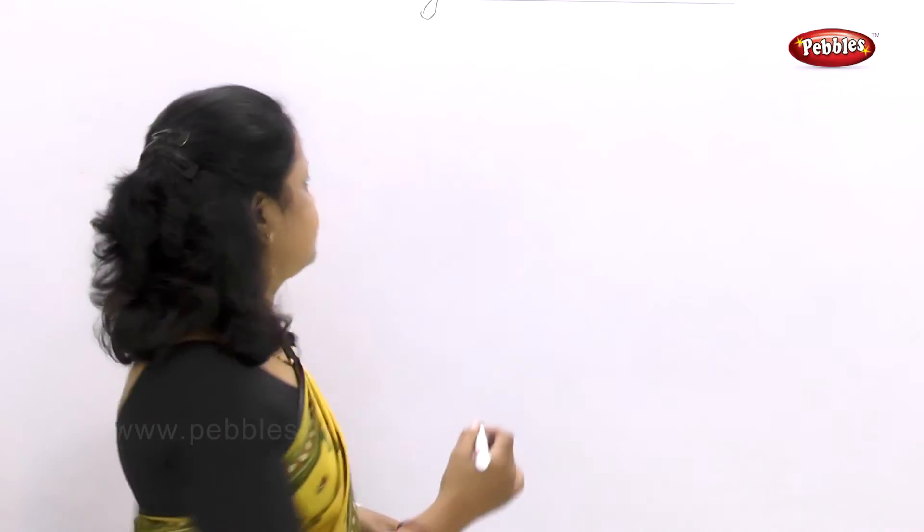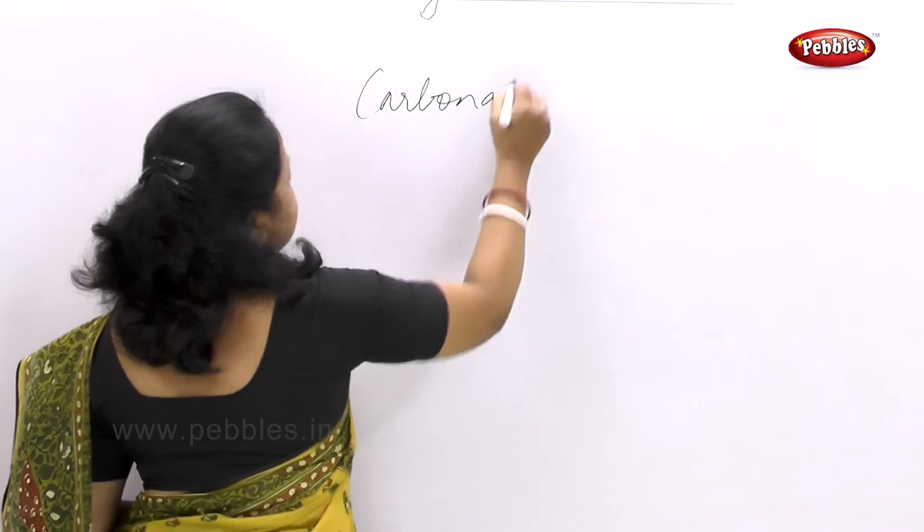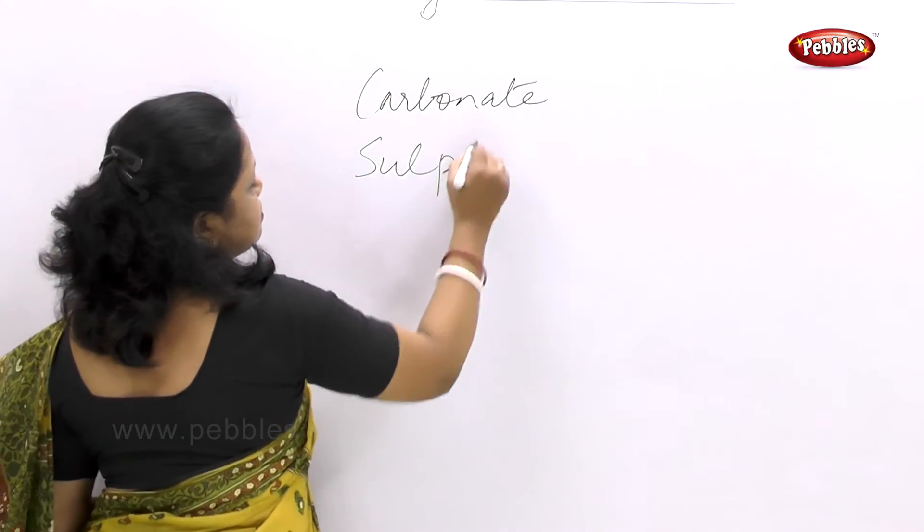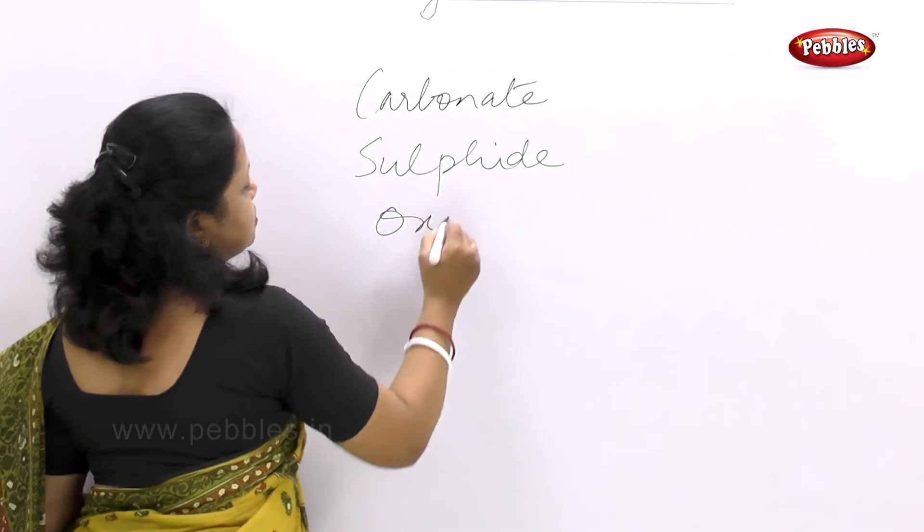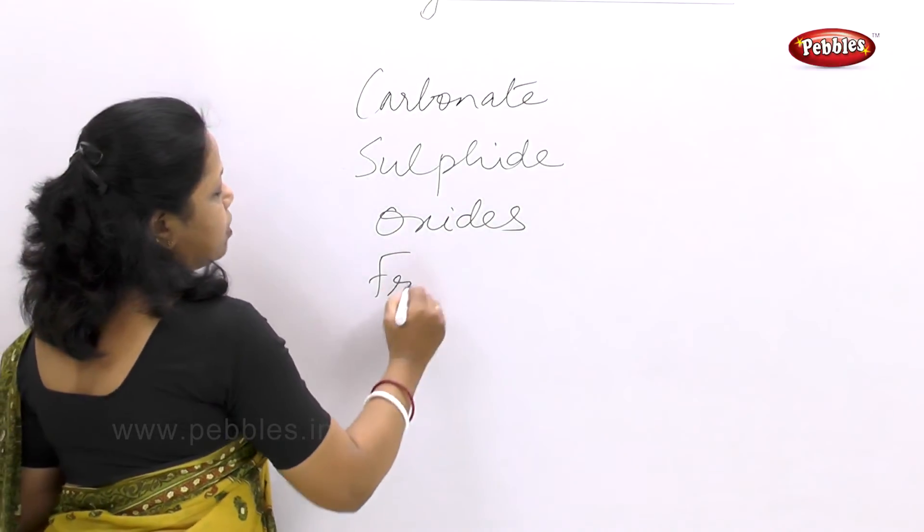Today we are going to study where metals occur in our surroundings — are they in a free state or a combined state? Some metals, as mentioned earlier, are very unreactive, like gold, silver, and platinum. They generally occur in their free state. But not all metals occur in free state — they can combine with carbon, oxygen, or sulphide to form their different ores: carbonate ores, sulphide ores, oxide ores, and also occur in free state.